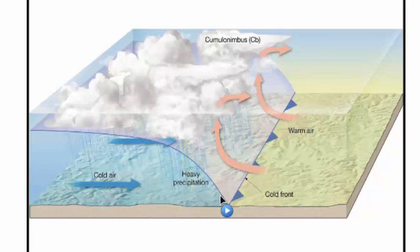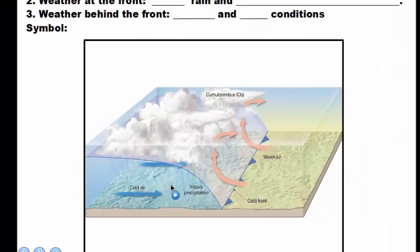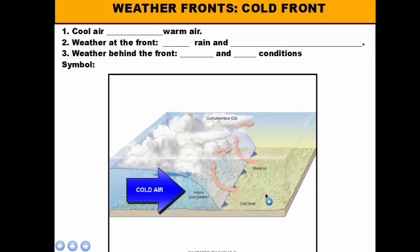As we learned in our density lesson, cold materials have more density so they tend to be heavier because there are more molecules per volume than in warmer air. As a result, this cool air is going to hug the ground and move across the surface, collide with the warm air mass, and since warm stuff is lighter and less dense it tends to rise. So this cold air mass is going to basically bulldoze and lift up the warm air.